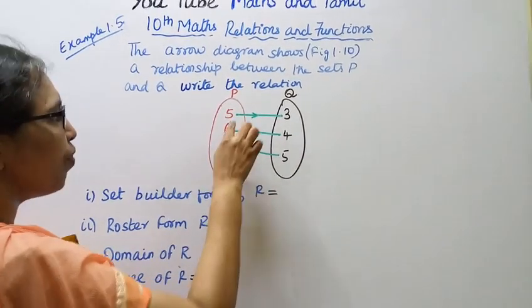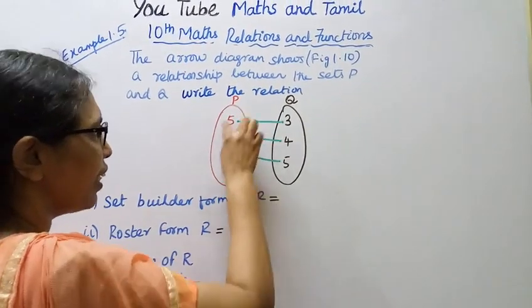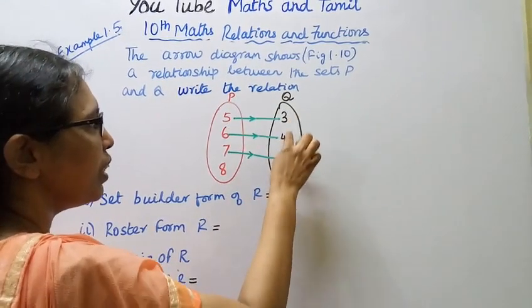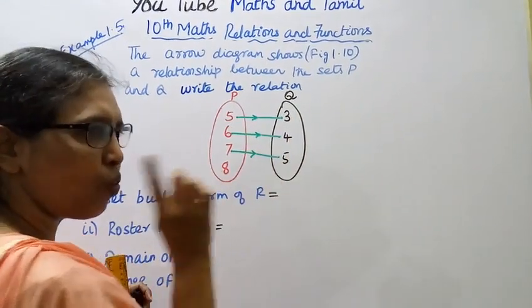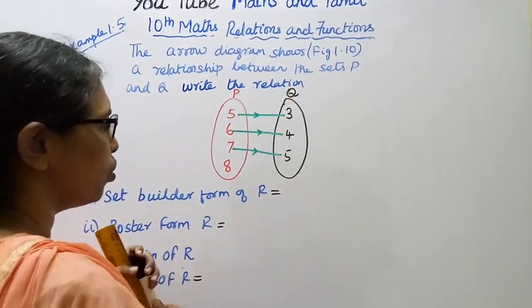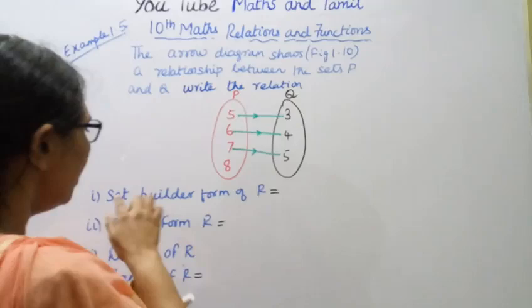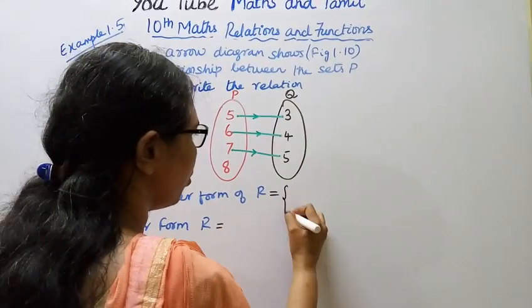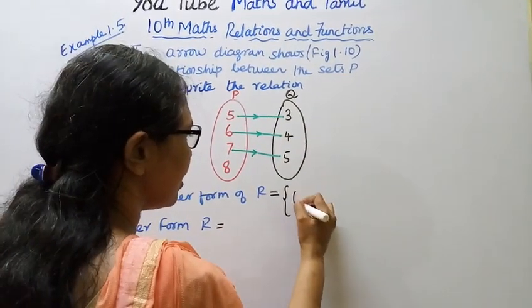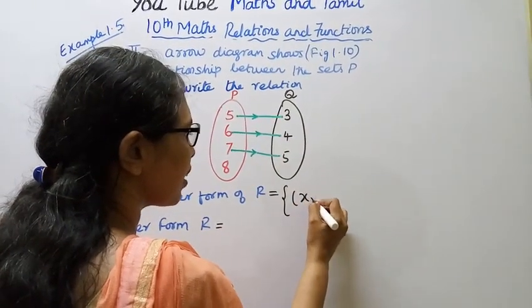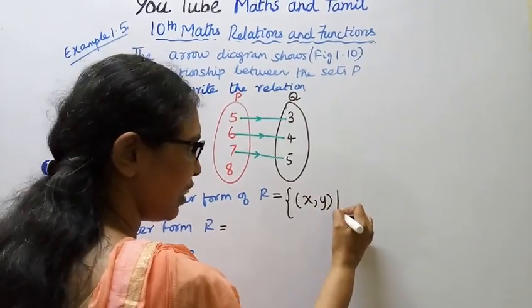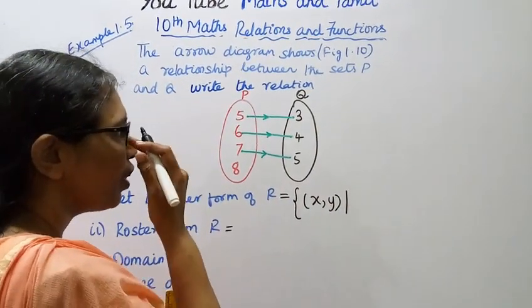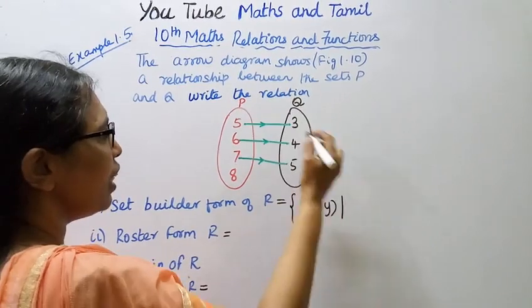These are the values of X, where X belongs to P. These are the values of Y, where Y belongs to Q. That is, the set of (X, Y) such that the relation holds.